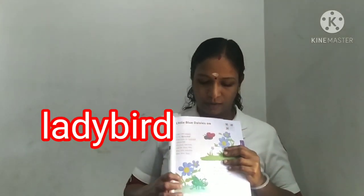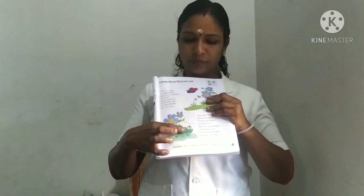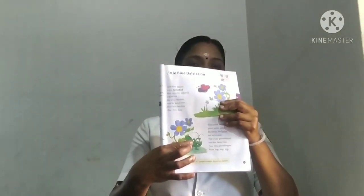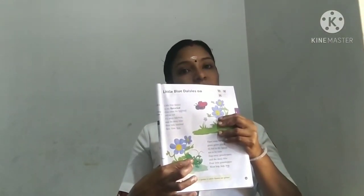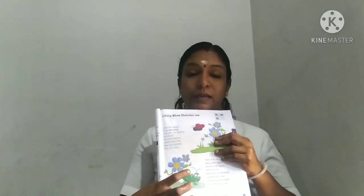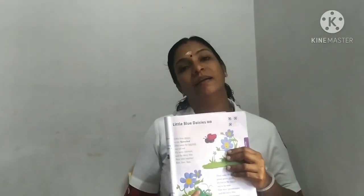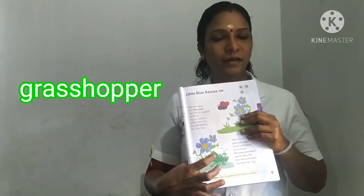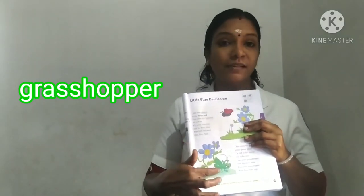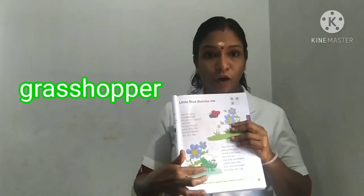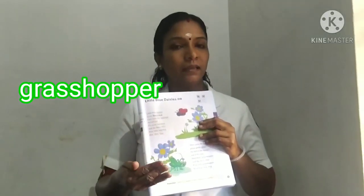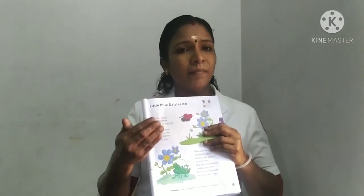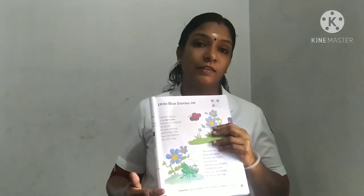And next one — what is this picture? It is another insect, and it is green in color. What is its color? Green. This insect is called grasshopper. I hope all of you have seen this grasshopper in your garden. If not, try to see this grasshopper in your garden — go to your garden and in some days you can see this grasshopper.